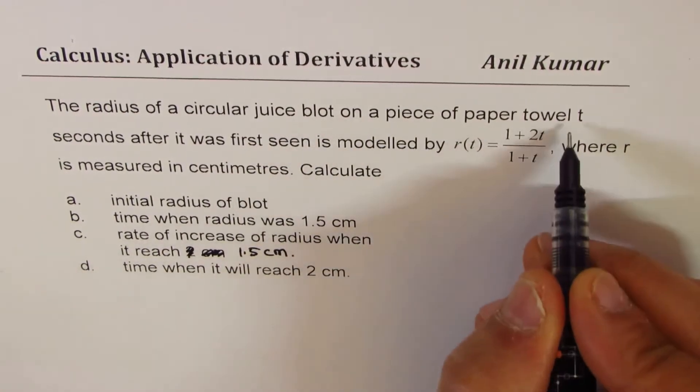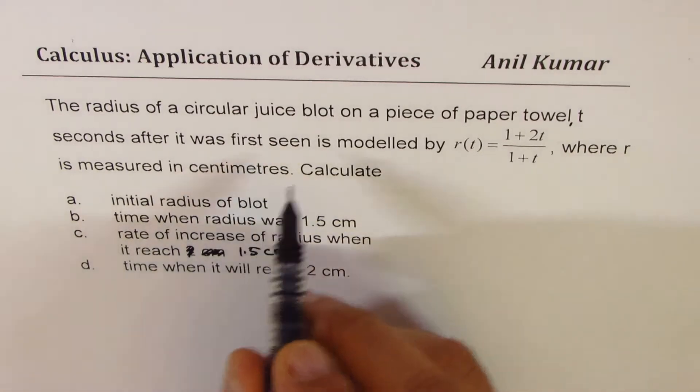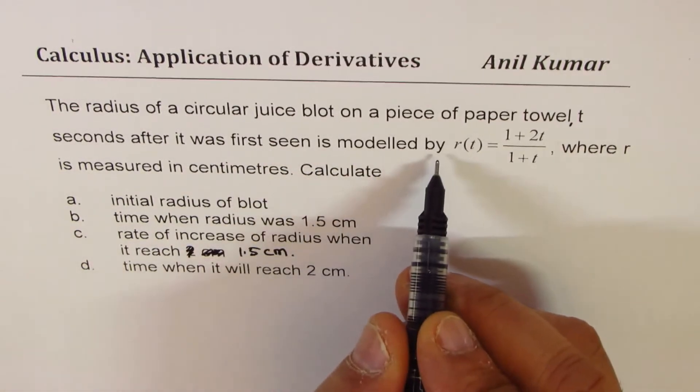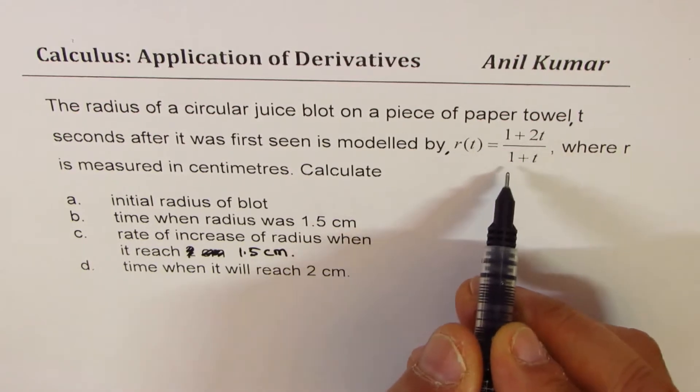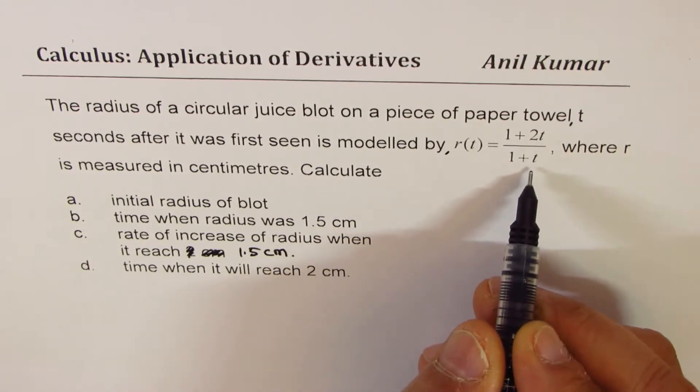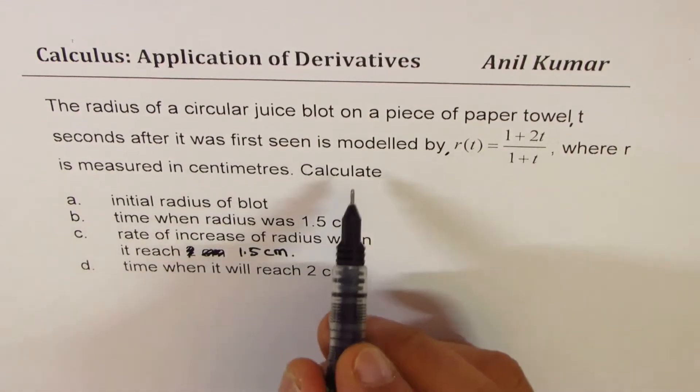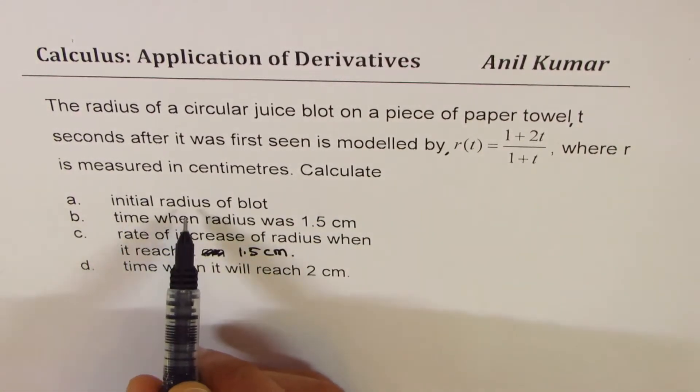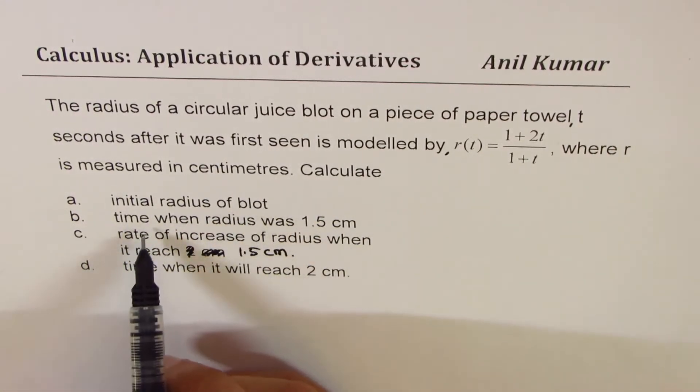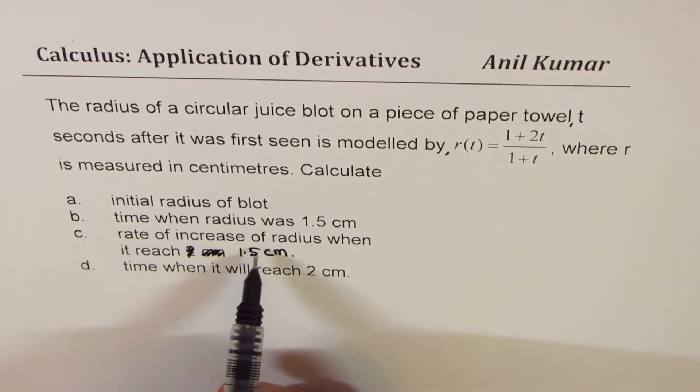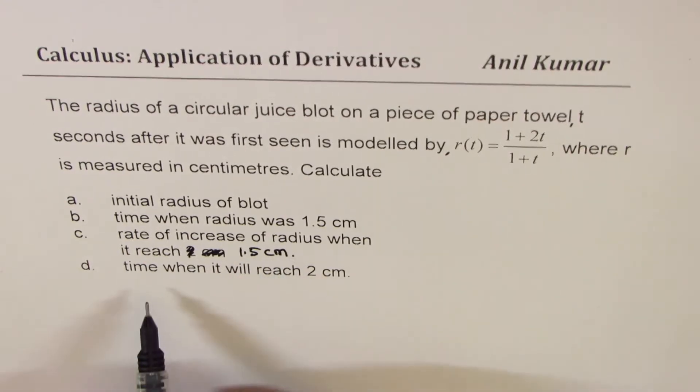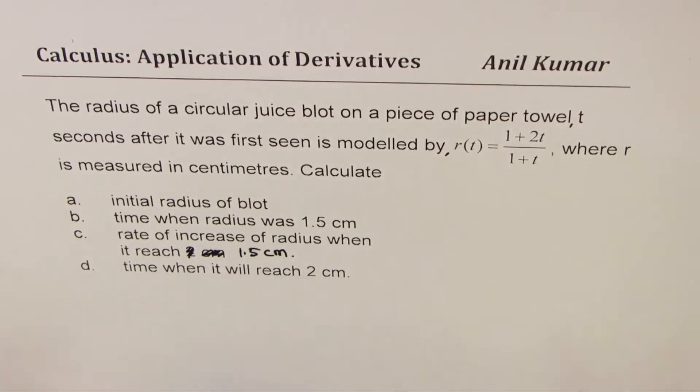paper towel t seconds after it was first seen is modeled by r(t) = (1 + 2t)/(1 + t), where r is measured in centimeters. Calculate: a) initial radius of blot, b) time when radius was 1.5 centimeters, c) rate of increase of radius when it reaches 1.5 centimeters, and d) time when it will reach 2 centimeters.